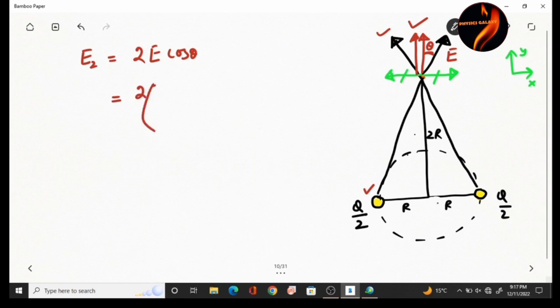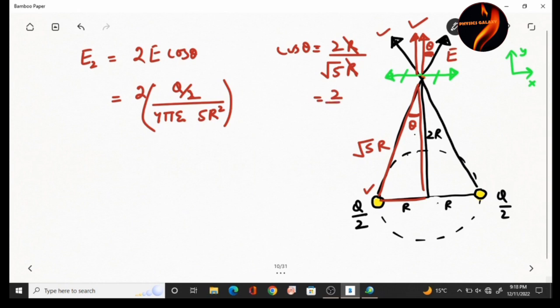E2 equals 2 times charge q by 2 divided by 4 pi epsilon 0 times distance squared. This distance is the hypotenuse which is root 5r, so root 5r squared that will be 5r squared, times cosine of theta.